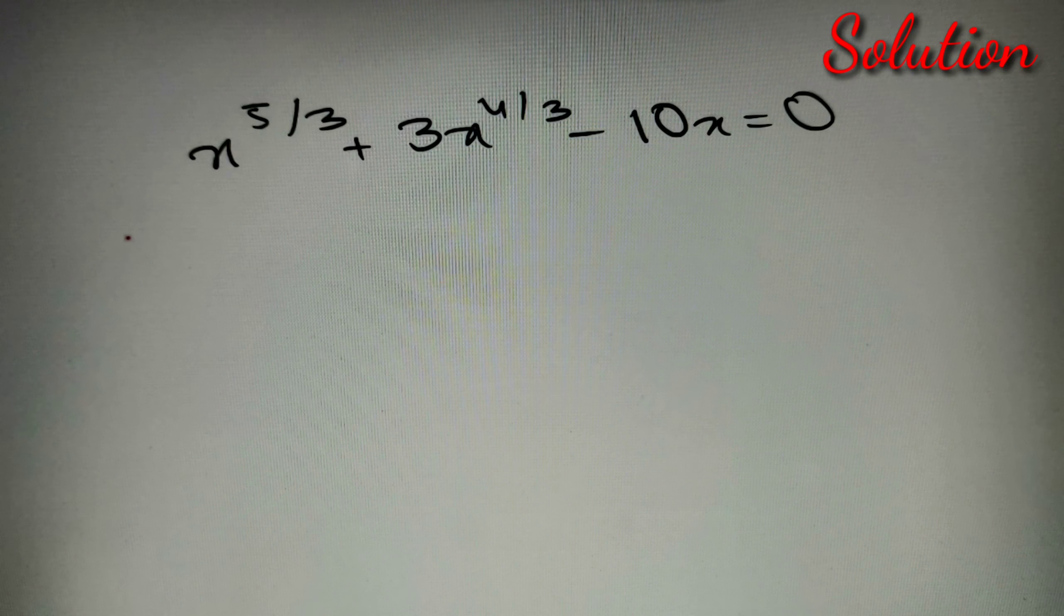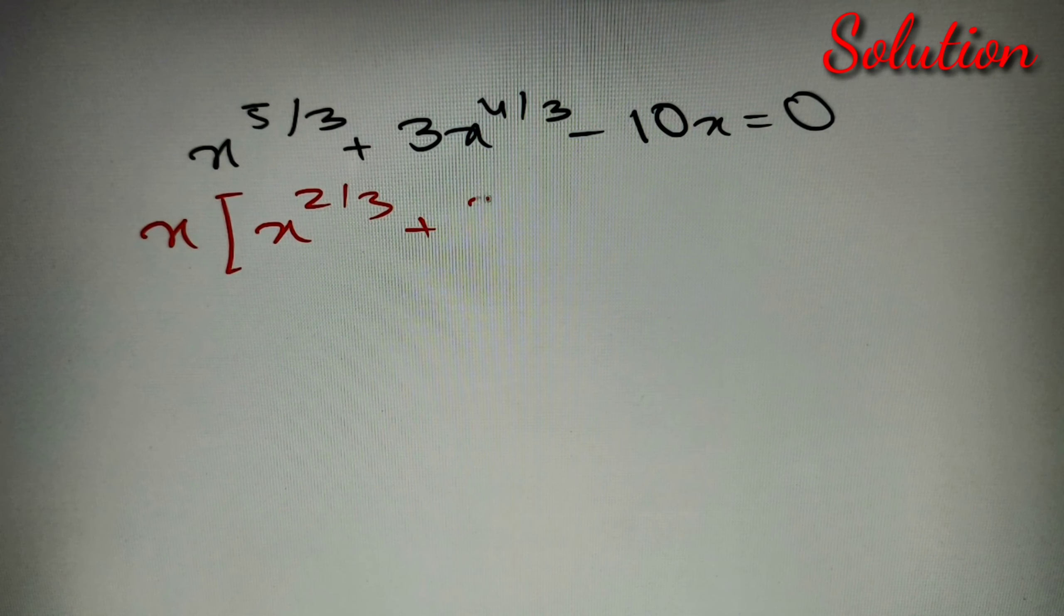Now if we take x common from all these terms, we'll have x(x^(2/3) + 3x^(1/3) - 10) = 0.